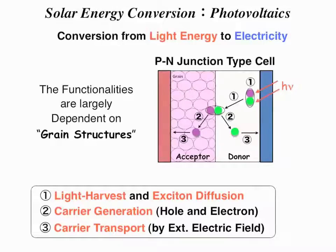First, after absorbing light, light-harvesting and exciton diffusion takes place. The exciton moves to the interfacial surface. Then, carrier generation takes place to create holes and electrons. Finally, carrier transport takes place by external electric field. These functionalities are largely dependent on grain structures.